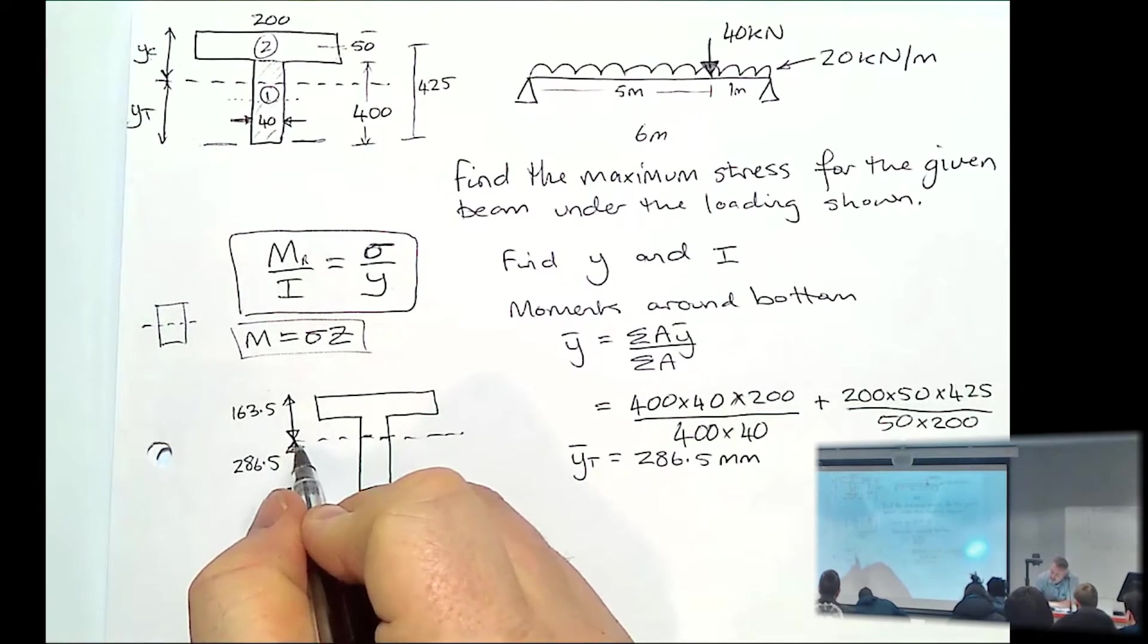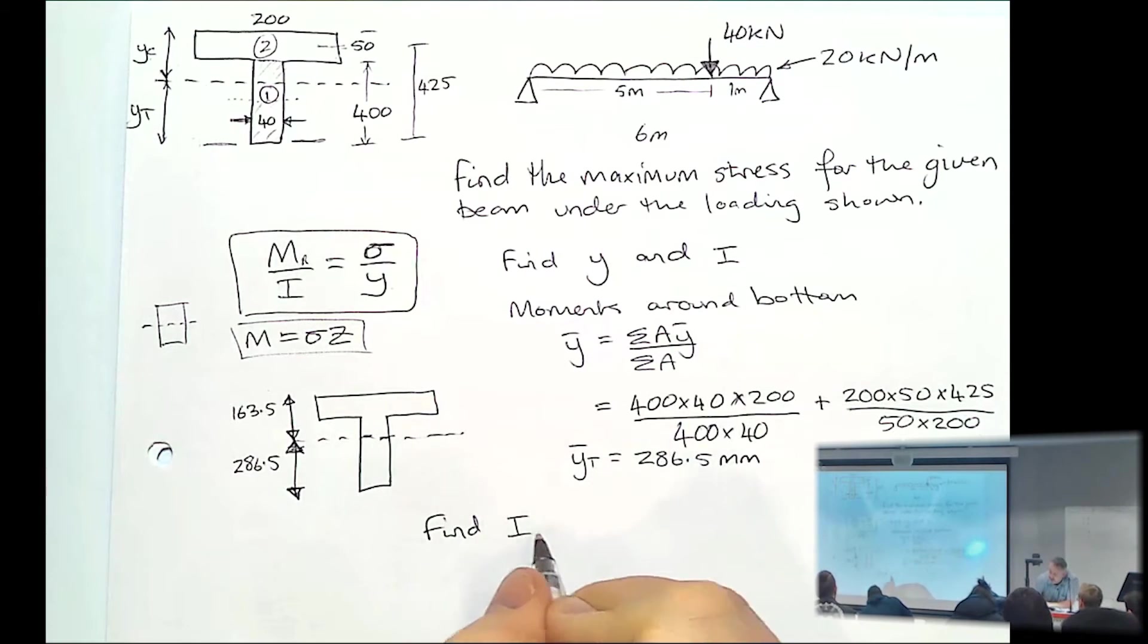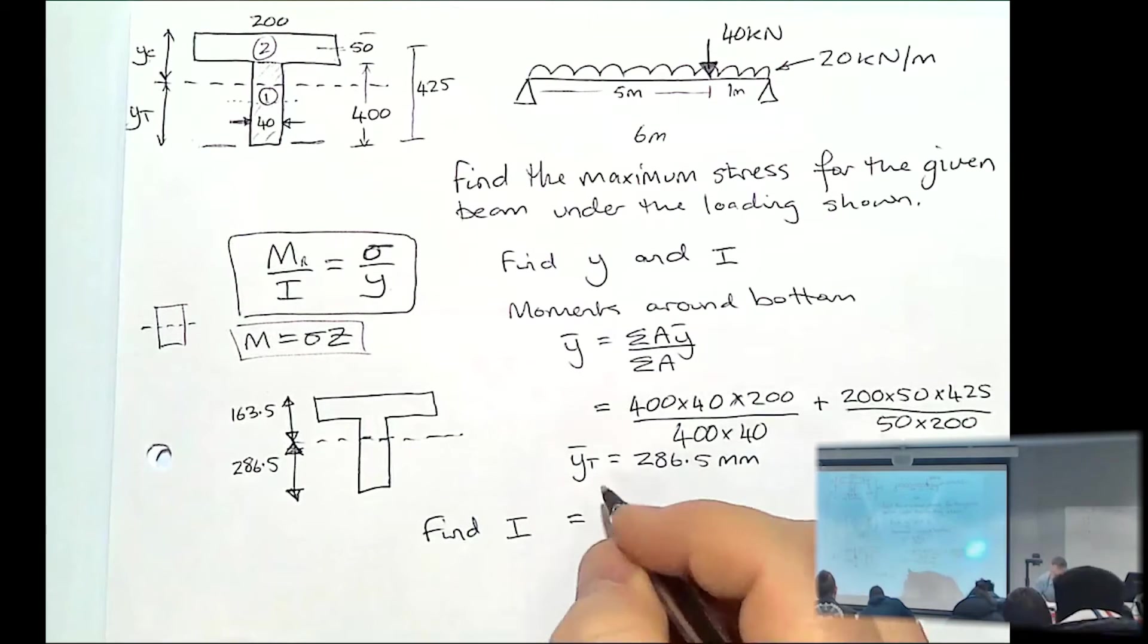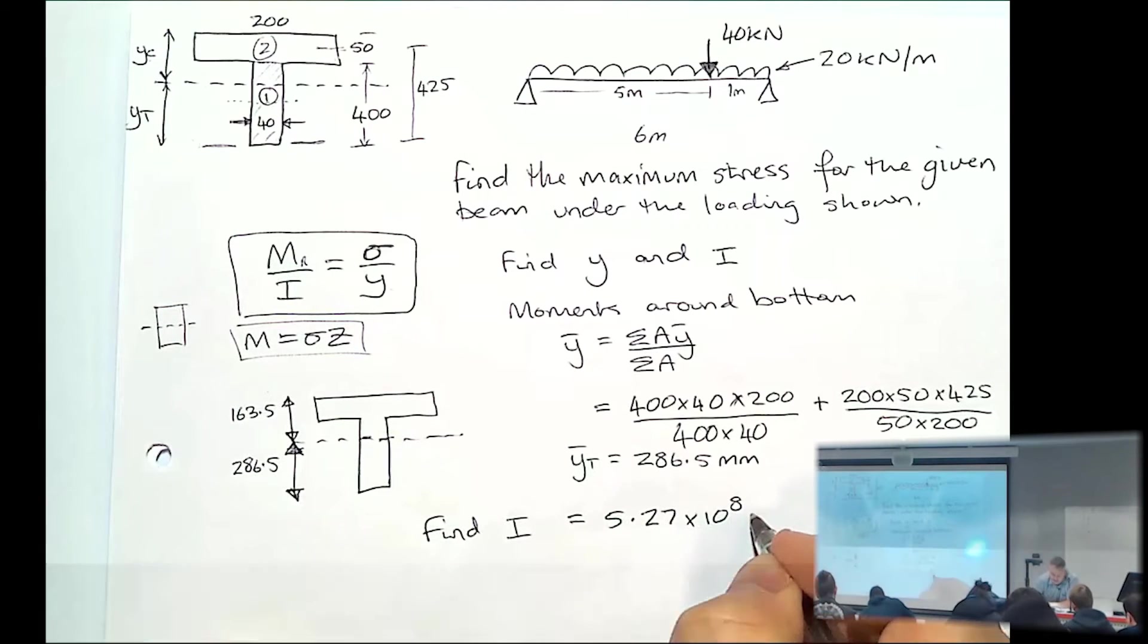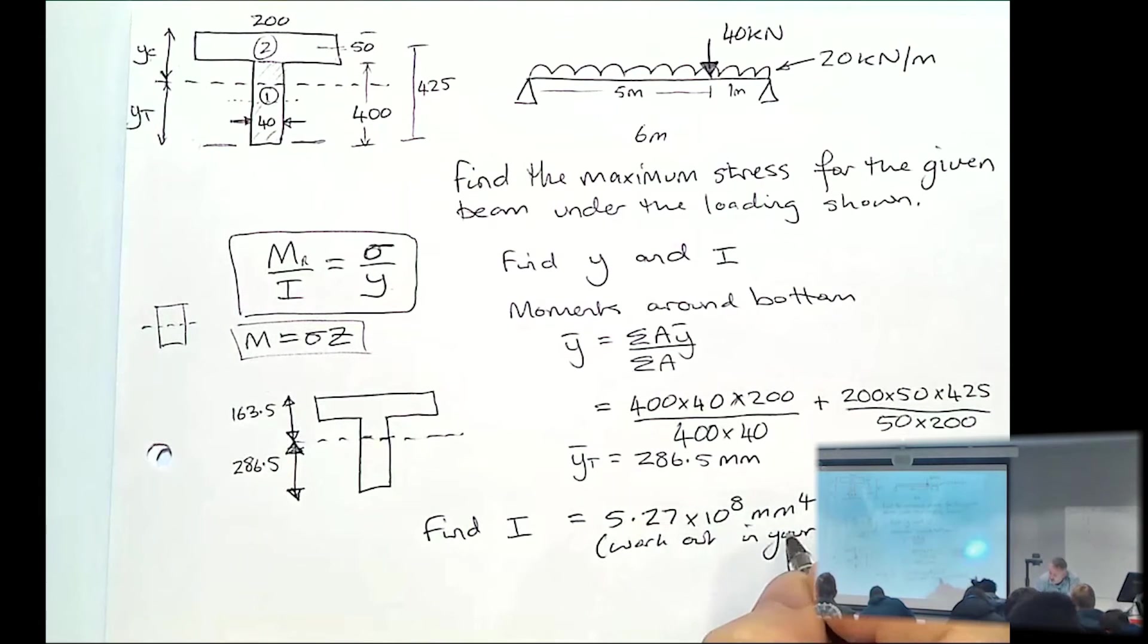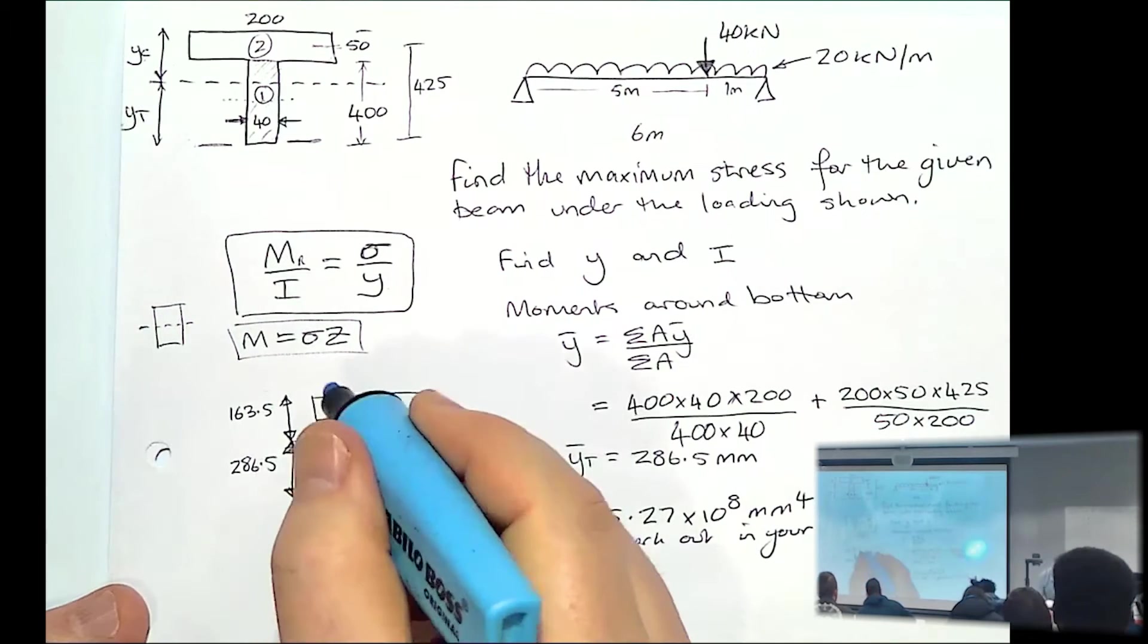Now that we know the position of the neutral axis, you'd have to find your second moment of area. Rather than going through this, off the top of my head, it would be 5.27 times 10 to the 8 millimeters to the 4. So work that out in your own time. Just to test your ability to work out the second moment of area for that T beam.